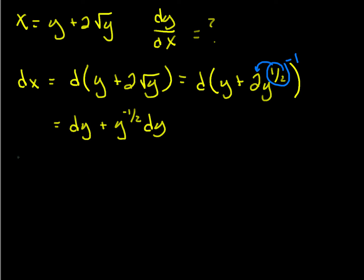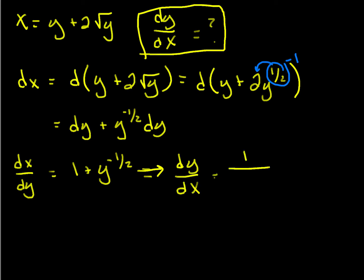So that means dx/dy is equal to 1 plus y to the minus one-half. But that's not what I wanted to know. I want to know what is dy/dx. But that's simply taking the reciprocal. So dy/dx is 1 over 1 plus y to the minus one-half.